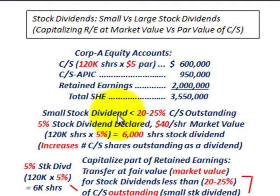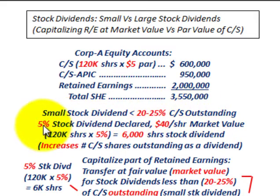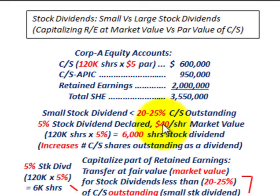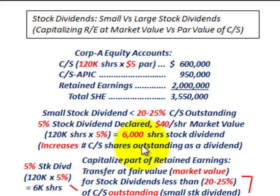Let's start with our small stock dividend. That's where you issue a stock dividend that's less than 20 to 25% of the common stock outstanding. In this case, we're going to have a 5% stock dividend declared, and when it's declared, the market value per share of our common stock is $40. In both cases — large or small — you're going to increase your common shares outstanding by the percentage of your dividend.